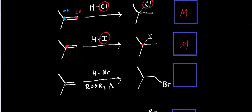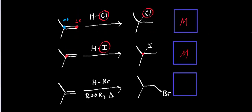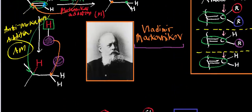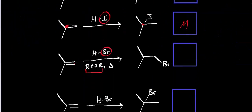Now here's a different reaction. We still use HBr, but we're throwing in a peroxide — this is an organic peroxide — and some heat. And notice that instead, the bromine right there actually adds to the least substituted side. So here's the bromine right there; that makes this an anti-Markovnikov addition.